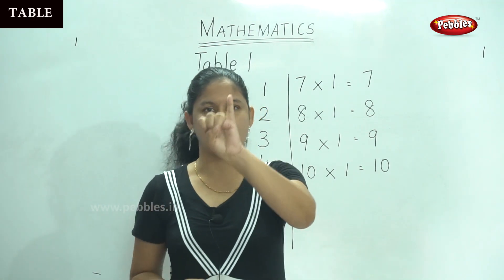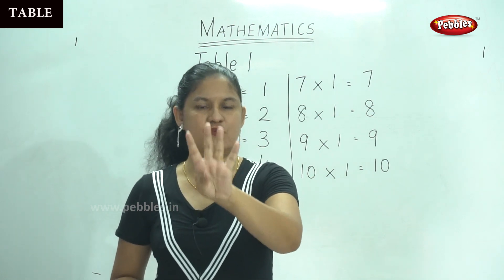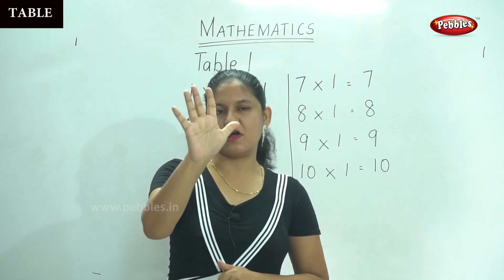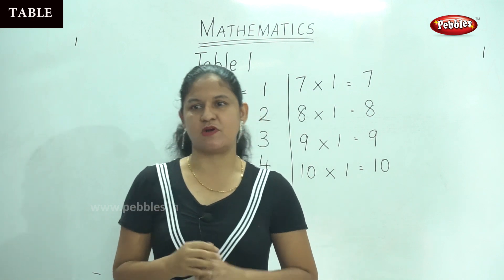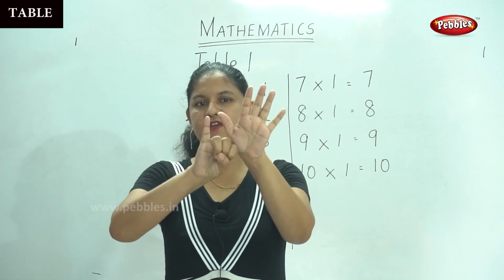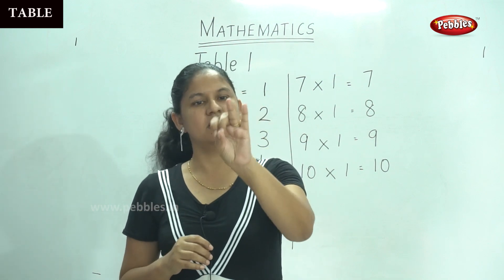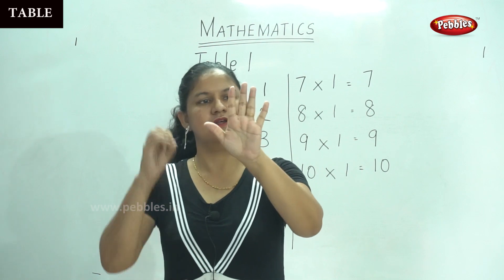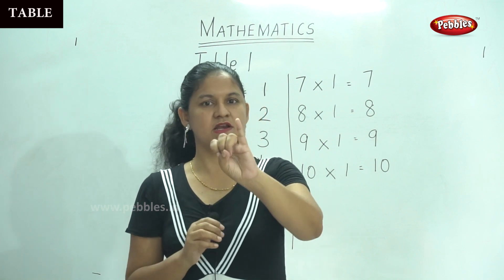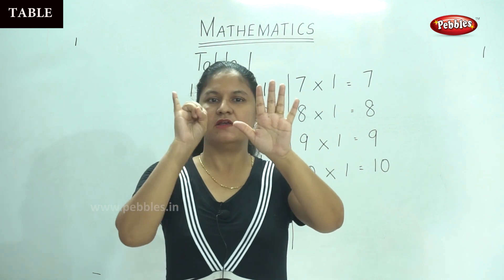4 times 1 gives you 4. 5 times 1 — counting 1, 1, 1, 1, 1 — gives you 5. 6 times 1 — counting six 1s — gives you 6. And 7 times 1 — counting seven 1s — gives you 7.